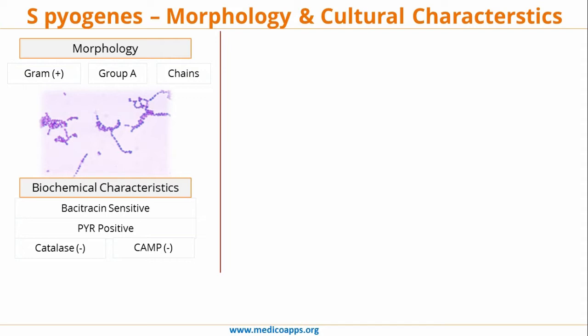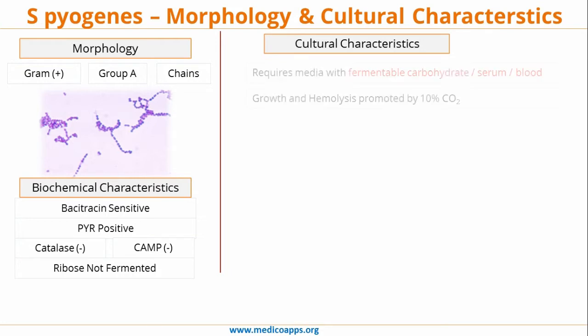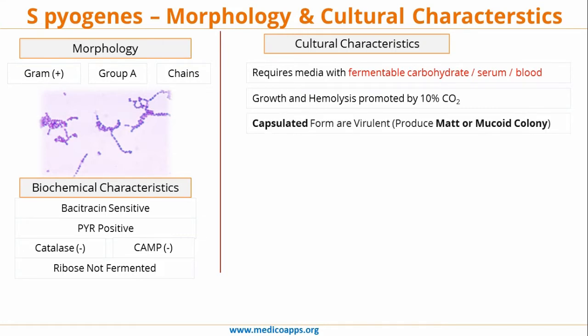Moving forward, ribose is not fermented by Strep pyogenes. Let's see the cultural characteristics. Strep pyogenes requires media with fermentable carbohydrate, serum, or blood, and its growth and hemolysis is promoted by 10% carbon dioxide.